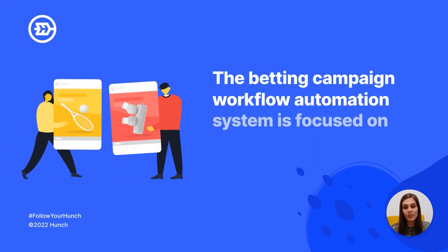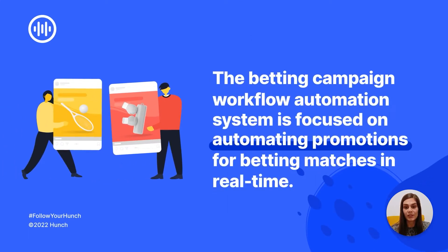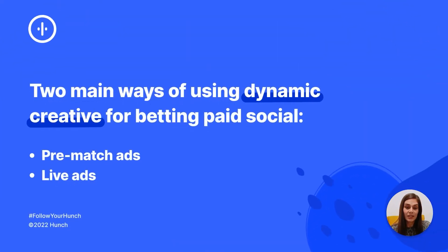Let's look at dynamic creative for betting ads. The betting campaign workflow automation system is focused on automating promotions for betting matches in real time. There are multiple benefits: it increases the relevance of your betting Facebook ads by showing personalized offers instead of generic ones, it saves you time from building creatives to deploying campaigns every day, and it allows you to create thousands of different ads for thousands of different matches. There are two main ways of using dynamic creative for betting paid social: pre-match ads and live ads. With pre-match ads, you're promoting matches on the day the game is played, and with live ads, you're promoting ongoing live matches.